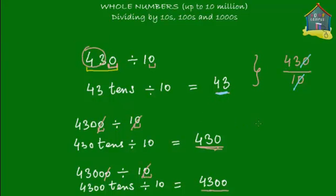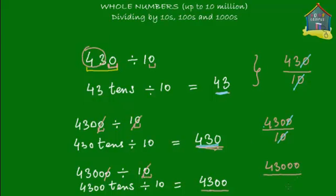In the third example, you have 43,000, which has three zeros, and 10 still has only one zero. So one zero from 10 and one zero from the given number get cancelled out, and all that's left for the quotient is 4,300. So you write 430 upon 10 — one zero and one zero get cancelled — and the quotient is 43. For 4,300 upon 10, cancel the zeros and you're left with 430. For 43,000 upon 10, cancel one zero from each and you're left with 4,300. That's dividing by tens.